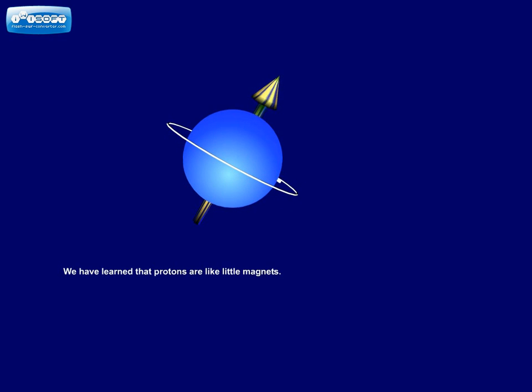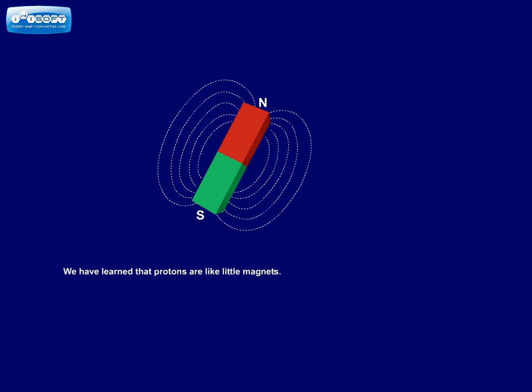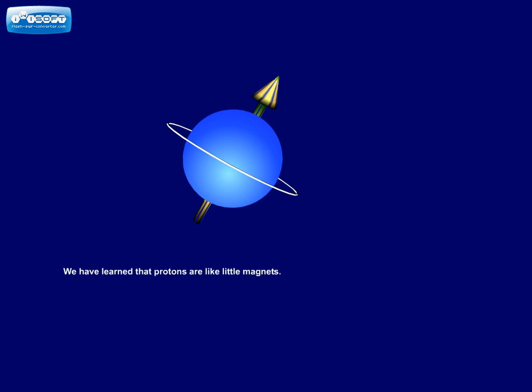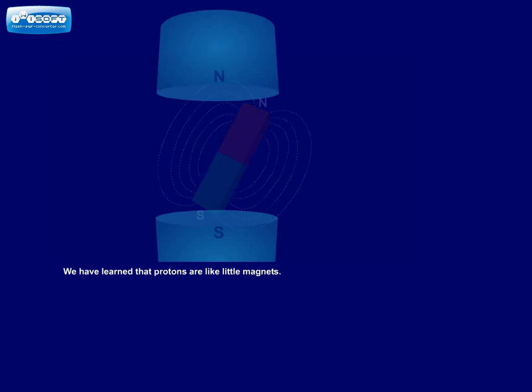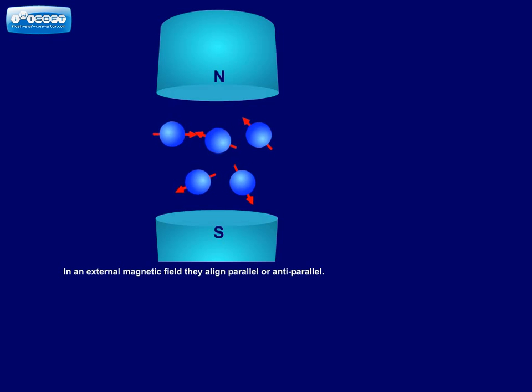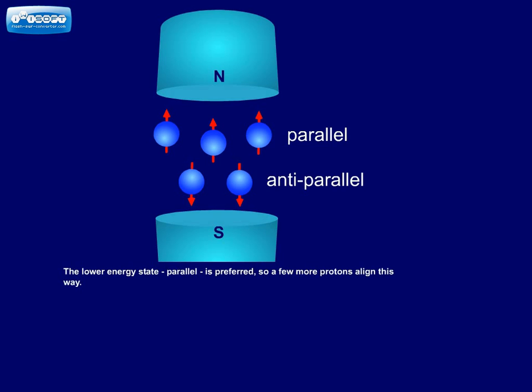We have learned that protons are like little magnets. In an external magnetic field, they align parallel or anti-parallel. The lower energy state, parallel, is preferred. So a few more protons align this way.